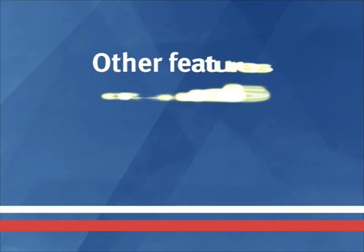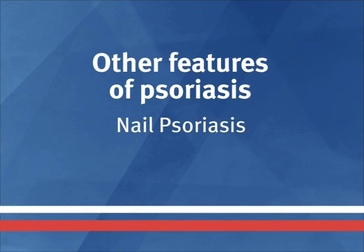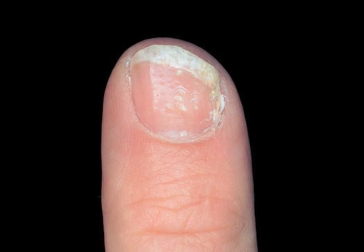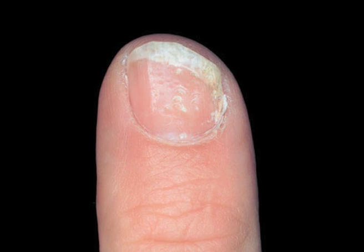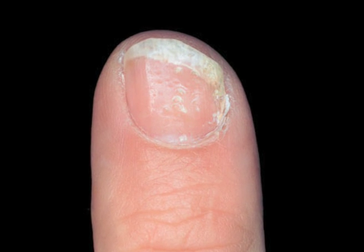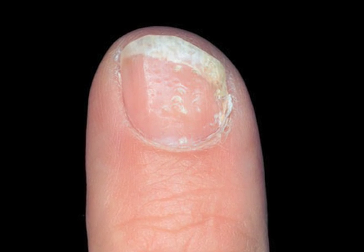Other features of psoriasis. Nail psoriasis is seen in 25 to 50 percent of patients and is more common in older patients. Nail changes include pitting, small indentations on the nail and separation from the nail bed.